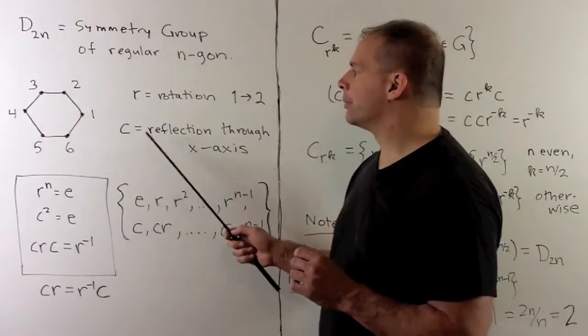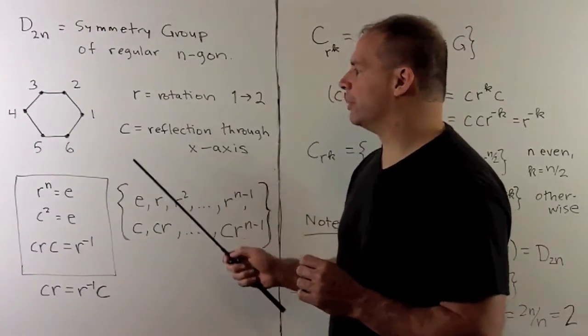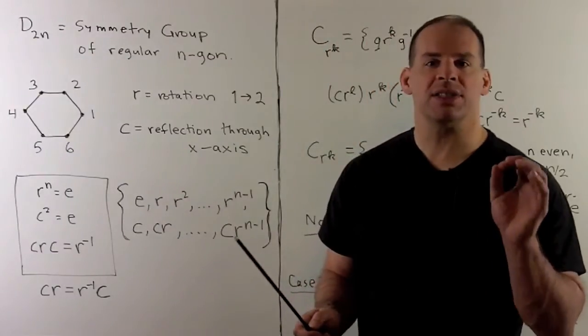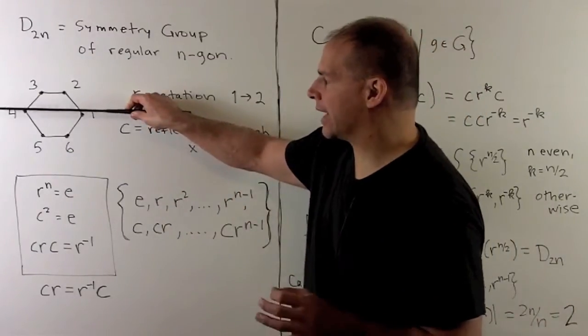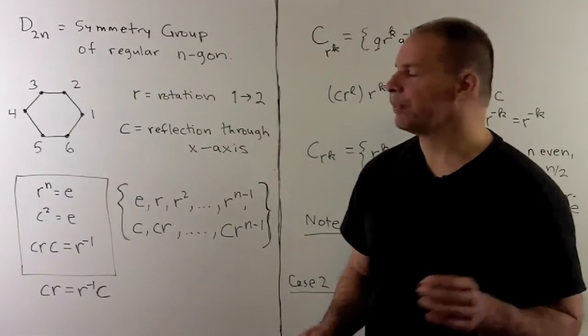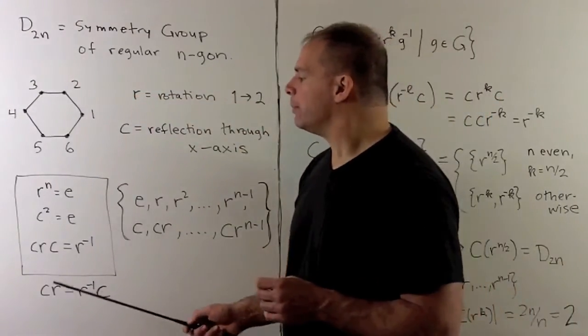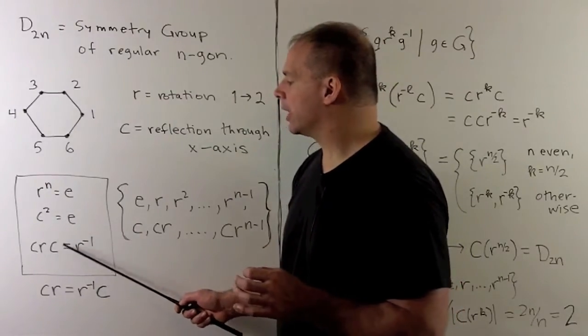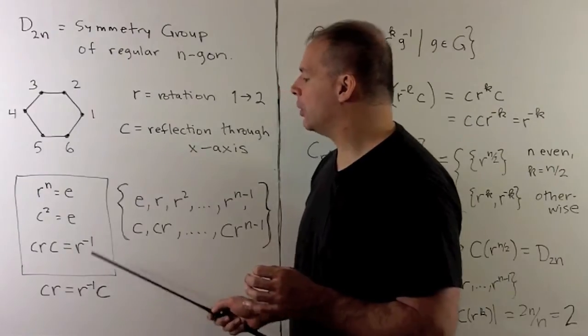We're going to have two generators. First is r, which is the rotation that carries 1 to 2. Second, c is the reflection across the x-axis. Then we have r has order n, c has order 2. And if I conjugate r by c, noting that c equals c inverse, we get r inverse.